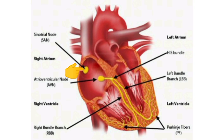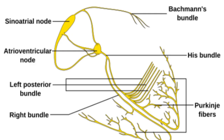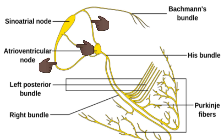The SA node is situated in the right atrium just below the opening of the superior vena cava. The AV node is situated in the right posterior portion of the intra-atrial septum. Impulses from the SA node are conducted throughout the right and left atria, and also reach the AV node via some specialized fibers called the internodal fibers.